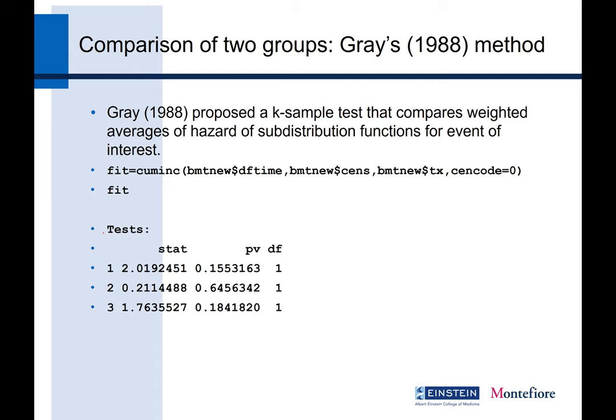We also like to present a test for whether the two groups differ. The CIF function incorporates Gray's test, which compares weighted averages of the sub-distribution hazard — it is a modified log-rank test using weights. The function gives a chi-square statistic and p-value for each event type. None of them are significant; for cGVHD the p-value is 0.15, meaning the intervention groups are not significantly different.